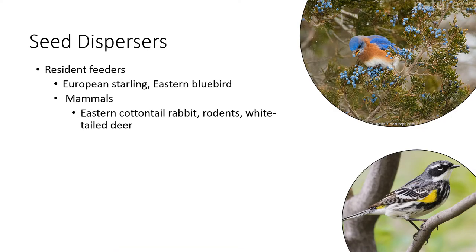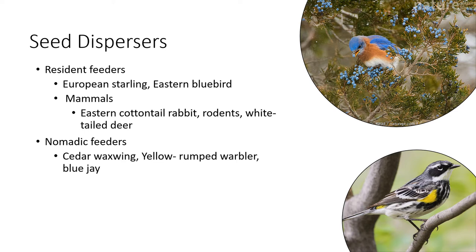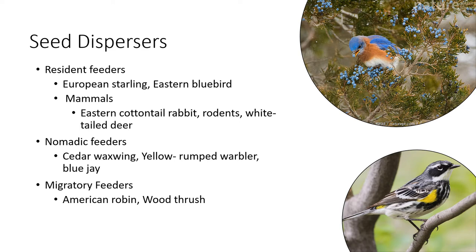We divided our dispersers into three groups. The first is the resident feeders — these organisms don't travel very far, stay in their natural habitats, and feed alone. This group also includes all mammal species in my project. Next are the nomadic feeders, which follow resources as they change and feed in large flocks, descending on an area and stripping the trees of berries before moving on. Third are the migratory feeders, which follow a set migration route throughout the year and also feed in large flocks.